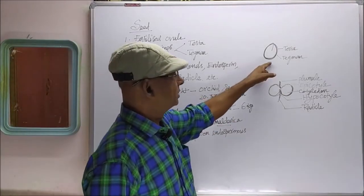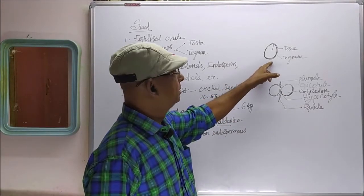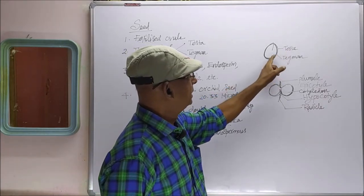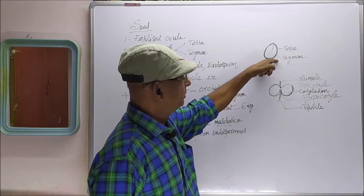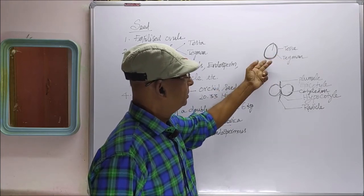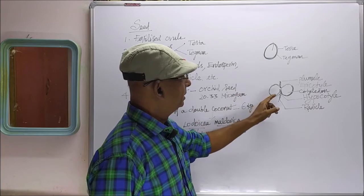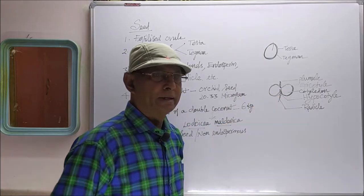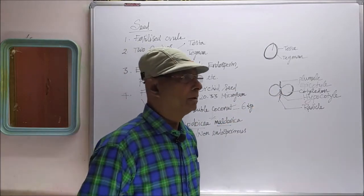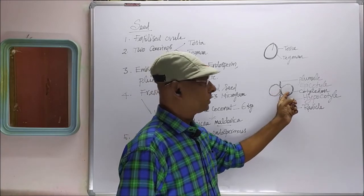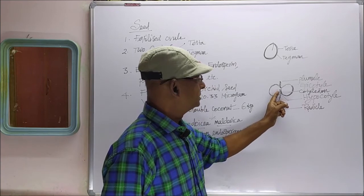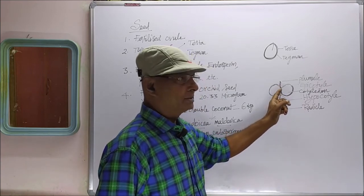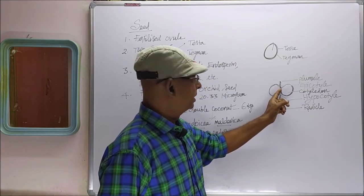This is a seed. It has outer covering testa and inner covering tegmen. If you split open the seed, you can see two cotyledons. In dicotyledon plants, presence of two cotyledons is the specialty. In between the two cotyledons, embryonal axis can be seen.